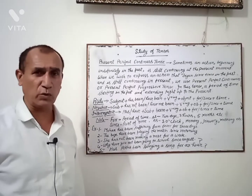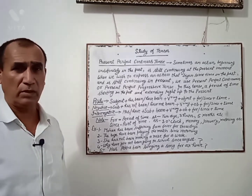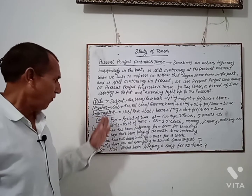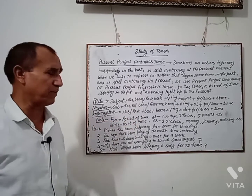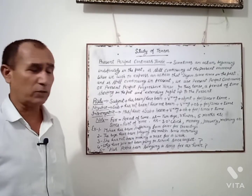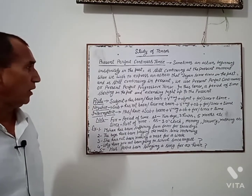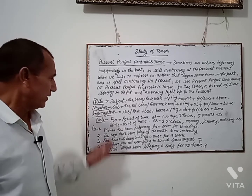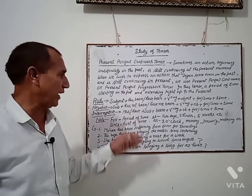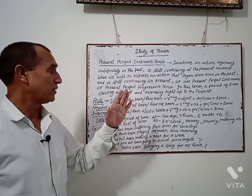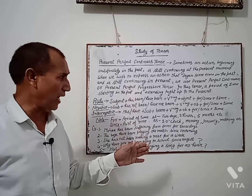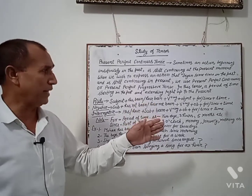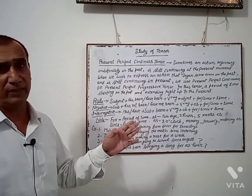One important thing to learn is the use of 'for' and 'since.' For is used for a period of time, such as two hours, two days, three months. Since is used for a point of time, such as three o'clock, four o'clock, Sunday, Monday, January, February, March, morning, evening.